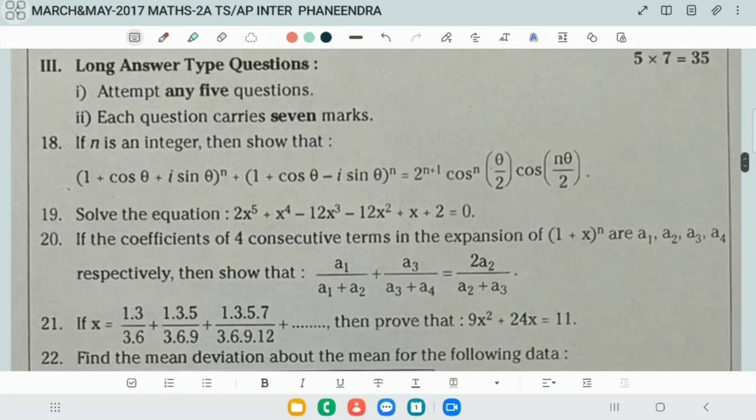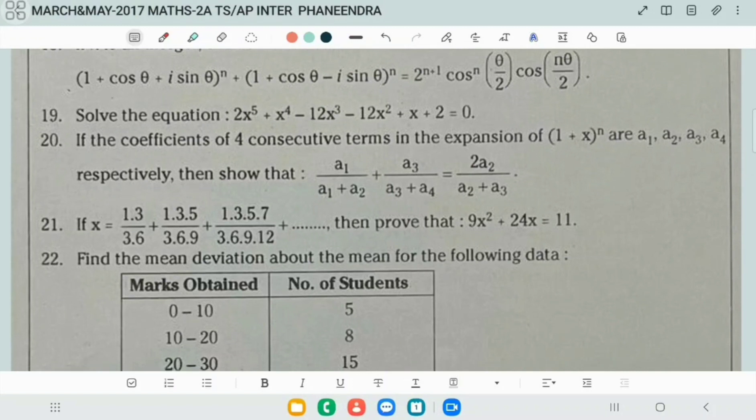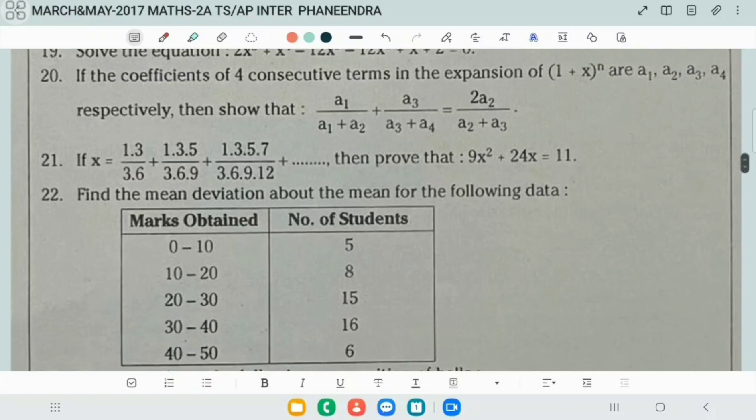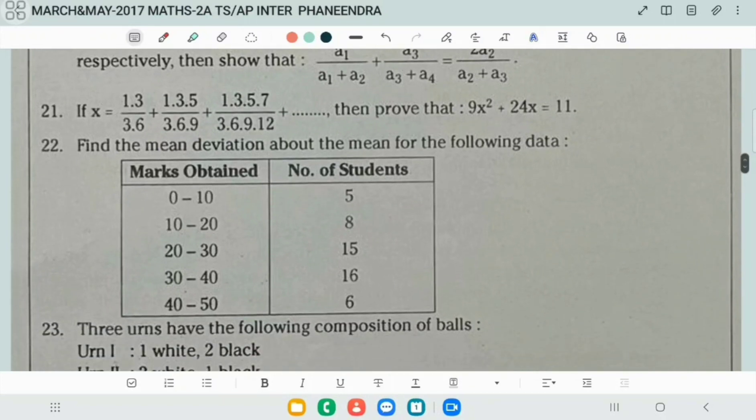Next, in Section C again, this was repeated. This type of question is also there. Here also 50 degree reciprocal equation, question number 20, binomial theorem. It is repeated in the May 2017 TS paper.